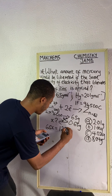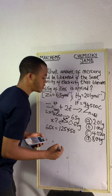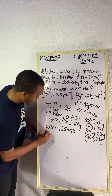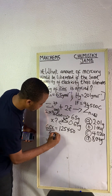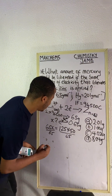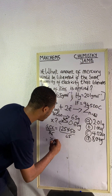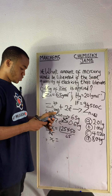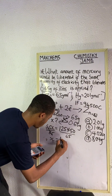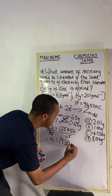So 65x equals 2 × 96,500 × 0.65, which gives us 125,450. Then we divide both sides by 65. Our x is going to be equal to 1,930 coulombs of electricity.